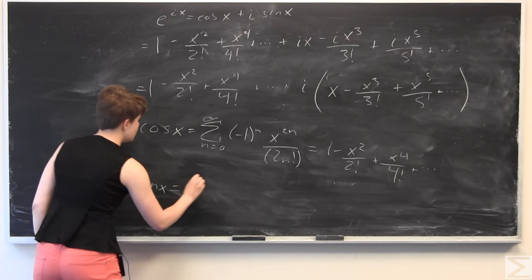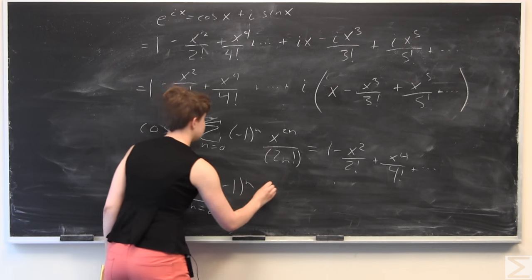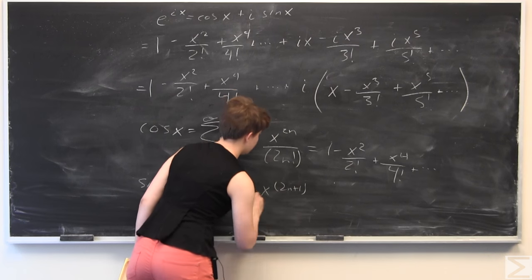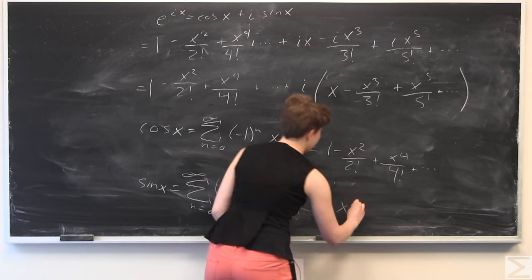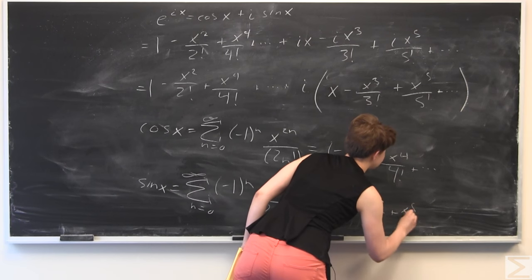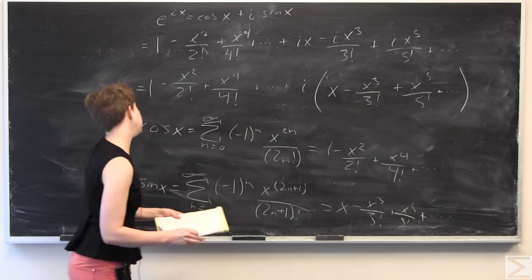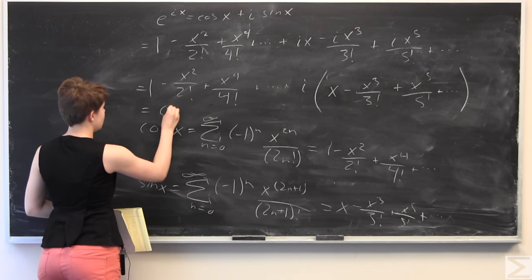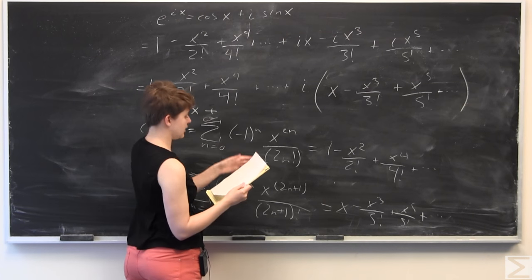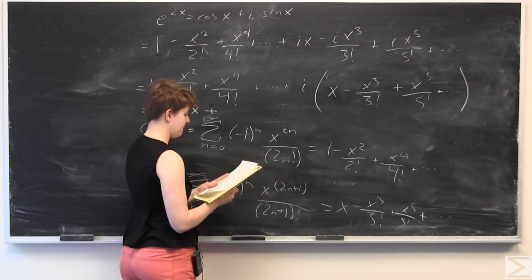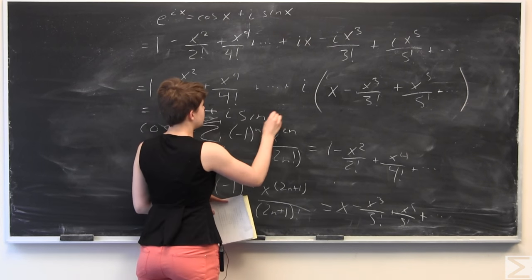We also have the MacLaurin expansion for sine of x: sine of x equals the sum from n equals 0 to infinity of negative 1 to the n times x to the quantity 2n plus 1, all over 2n plus 1 factorial, which equals x minus x cubed over 3 factorial plus x to the fifth over 5 factorial, and so on. So this expression becomes exactly cosine of x plus i times sine of x.